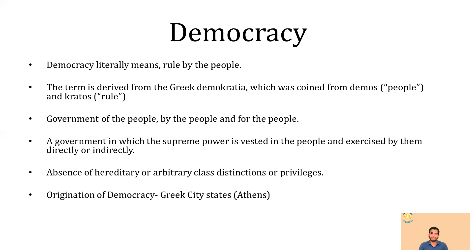People are going to form the government, people are going to be in the government, and people themselves are going to govern the country for the people. This is the basic meaning of democracy. In short, the supreme power is vested in the people — no third party will be allowed. People are considered as supreme power in a democracy, and it can be exercised directly or indirectly. We have two types of democracies: direct democracy, where people rule directly, and indirect democracy, where people rule but indirectly.